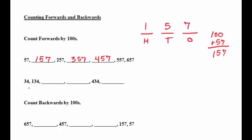In the second example, we're going to start off with 34. When we add 100 to 34, we're going to get 134. Then we add 100 to that, we get 234. Then we get 334, and add 100 to that, we get 434.